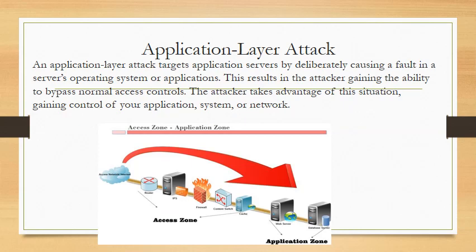The application layer attack, also known as DDoS. This targets application services by deliberately causing a fault in the server's operating system or application, resulting in the attacker gaining the ability to bypass normal access controls. The attacker takes advantage of the situation, gaining control of your application systems. They could erase your data, completely take over your system, or steal your credit card and personal information — making this one of the most dangerous types of attack. They bypass your router, IPS, firewall, switch, cache, and web server to reach the database server.